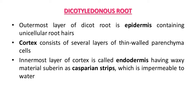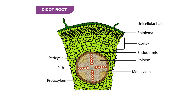So in dicotyledonous root, from outside to inside: the first outermost layer is epiblema or epidermis, next is cortex, and the innermost is endodermis. This figure gives a clear idea about the anatomy of dicot root. The outermost layer, epiblema, has parenchymatous cells and outgrowths as root hairs, which are unicellular and increase the absorptive area. The following region — cortex — consists of several layers of thin-walled parenchymatous cells.